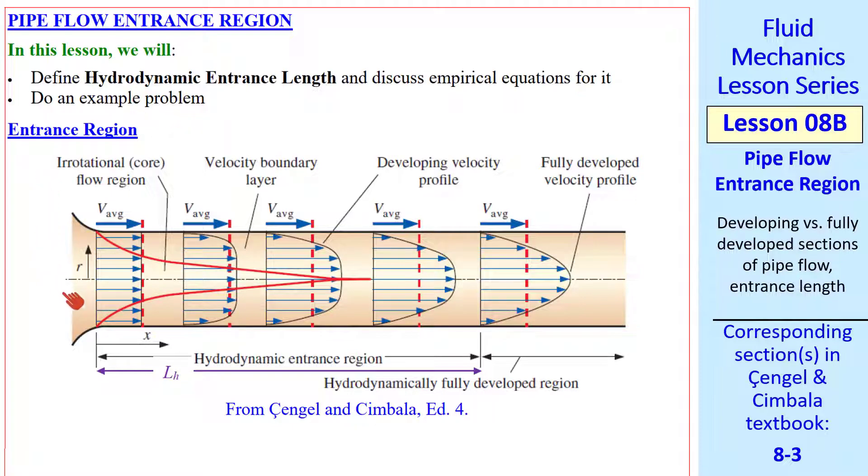Here's a sketch of the entrance region into a pipe. We assume we have a well-rounded inlet so that the velocity profile right at the entrance is nearly uniform. There will be a very thin boundary layer along the wall. That boundary layer will grow with distance downstream, eventually merging at the center.